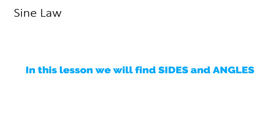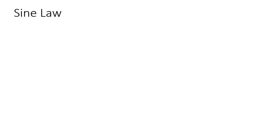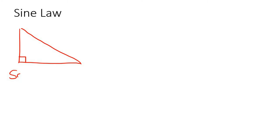In this lesson, we're going to talk about the sine law. So if you have a 90 degree triangle or a right angle triangle, then we normally just use SOH-CAH-TOA, which we've used before. But what if you have a triangle that is not 90 degrees?